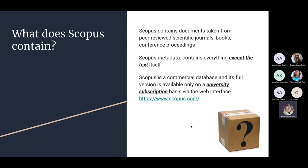What does Scopus contain? We have said that Scopus does not contain full texts — Scopus metadata contains everything except the full text itself. Scopus documents are taken from peer-reviewed journals indexed in Scopus, books indexed in Scopus, and conference proceedings indexed in Scopus.